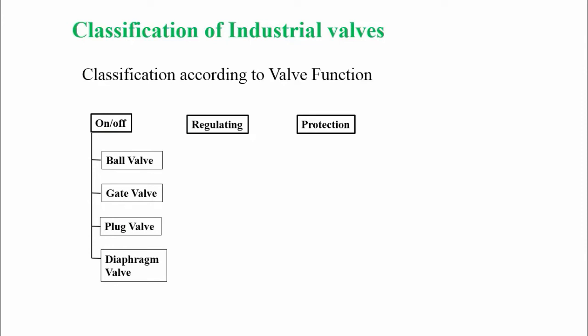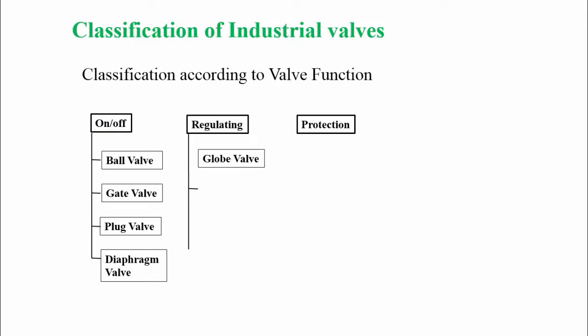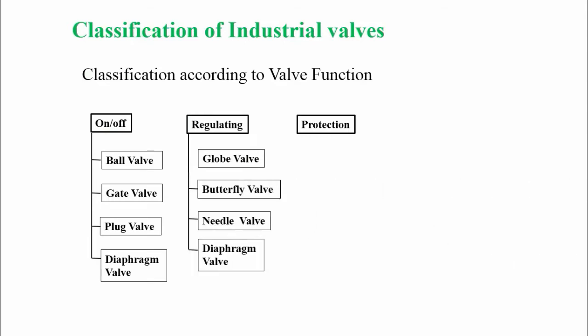Regulating valves are used in automatic control and regulating systems. In this category we can find globe valve, butterfly valve, needle valve, and diaphragm valve. Though the diaphragm valve is used as an on-off valve, it also can regulate the fluid flow.